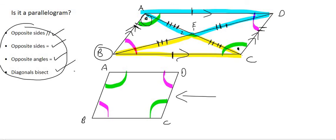A parallelogram is any shape where the opposite angles are equal — not parallel, but equal.